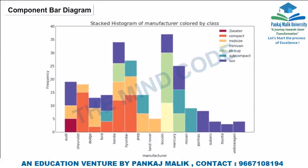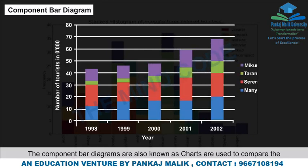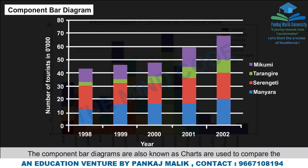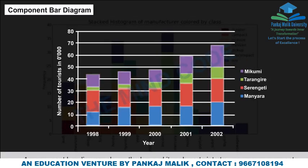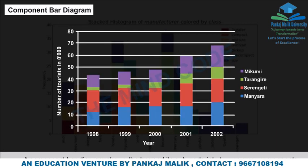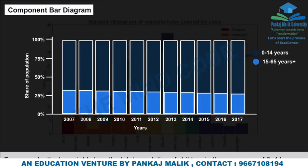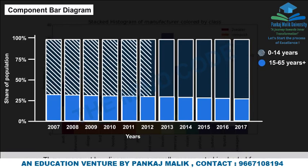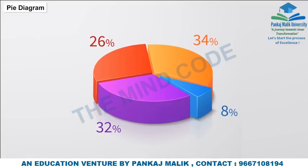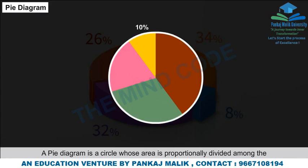Component Bar Diagram: Also known as charts, component bar diagrams are used to compare the sizes of different parts and show relationships among them. A component bar diagram shows a bar divided into two or more sub-components. For example, a bar might show the total population of children in the age group of 6 to 14 years. These diagrams are generally represented in shaded form.